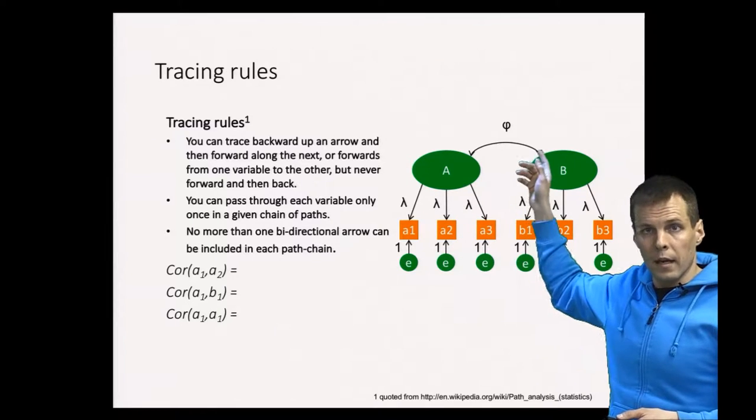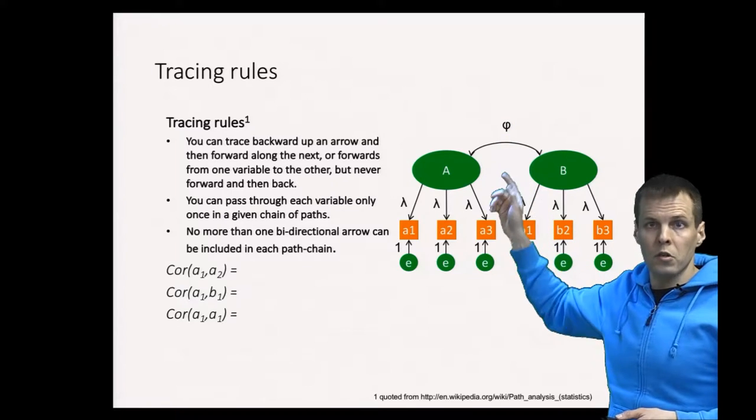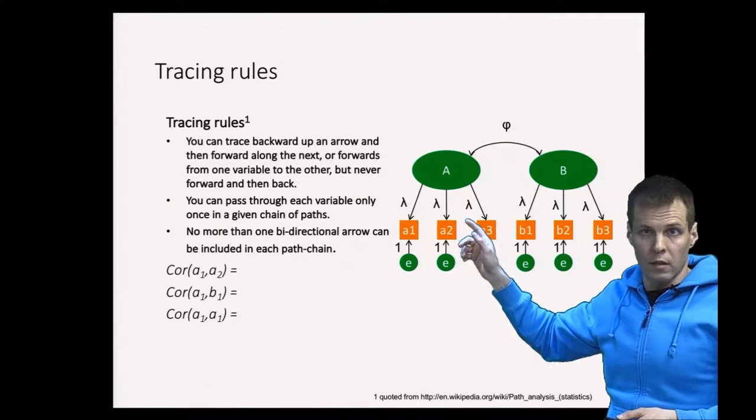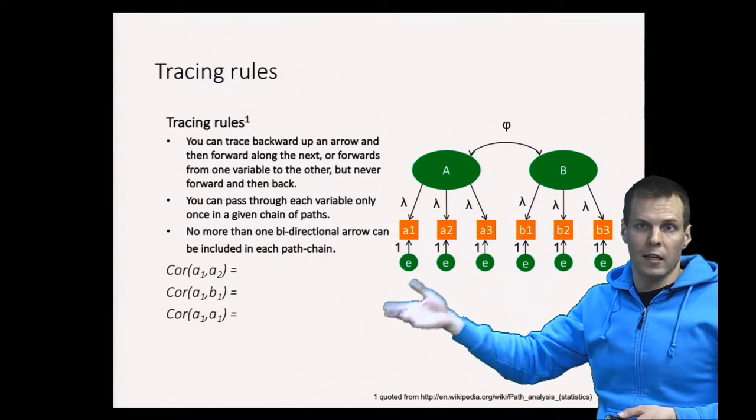We use the Greek letter phi for a factor correlation—that's a convention—and we use lambdas for factor loadings. That's also a convention, and these are all different lambdas, so they take different values.